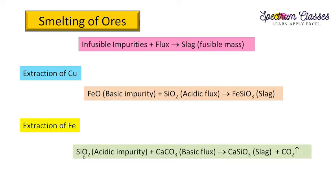In the extraction of iron, silica (SiO₂) is the impurity, which is acidic in nature. For this acidic impurity, a basic flux is required. Calcium carbonate (CaCO₃) is used as the basic flux, forming CaSiO₃ as slag and releasing CO₂ gas. So smelting converts infusible earthy impurities into fusible mass using appropriate flux. I hope you understood calcination, roasting, and smelting. If you found this useful, please subscribe and give a thumbs up.